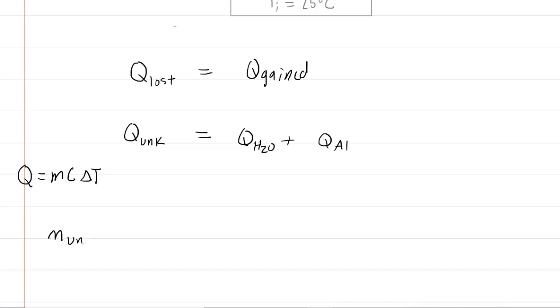For the unknown, we would say that the mass of the unknown multiplied by the specific heat of the unknown, which is what we're looking for, multiplied by the temperature change of the unknown. For the temperature change, we express that as the final temperature minus the initial temperature, and those would be the values for the unknown.